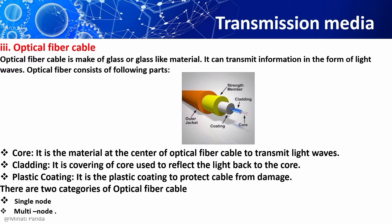which is usually made up of plastic or glass. Optical fibers are unaffected by electromagnetic interference. Optical fiber consists of the following parts. The first one is the core — it is the material at the center of the optical fiber used to transmit light waves.